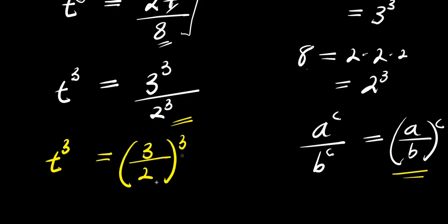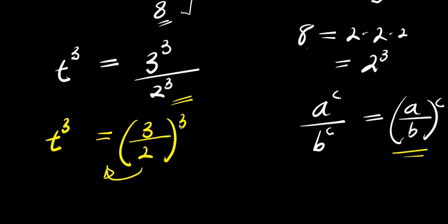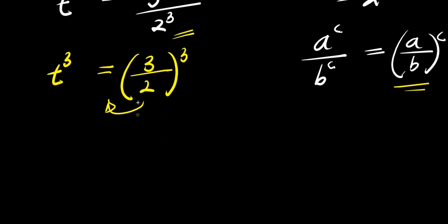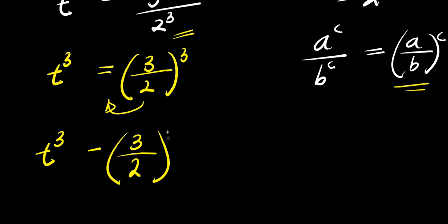The next step is to move the right-hand side over and equate everything to zero. When a term crosses the equality sign it changes to negative, so we have t to the power of 3 minus 3 divided by 2, raised to the power of 3, equals 0.